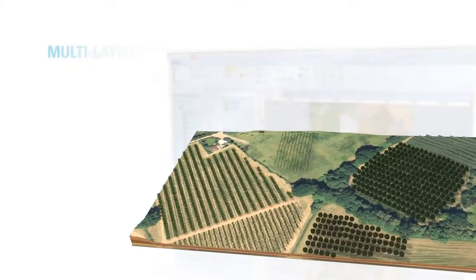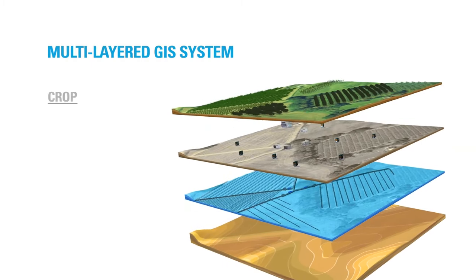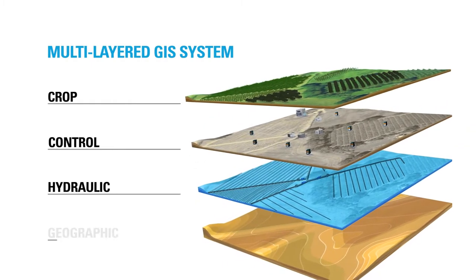U-Manage features a geographic information system that breaks down each field into four layers: Crop, control, hydraulic, and geographic.